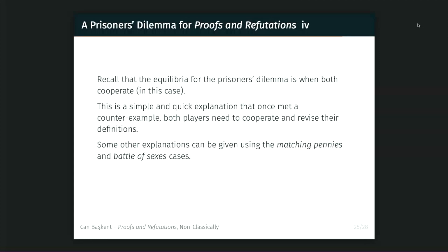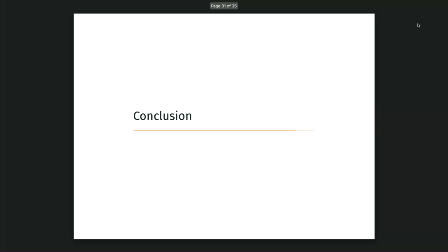I used the prisoner's dilemma here, but you can use similar examples such as Matching Pennies or Battle of Sexes, because they all give interesting explanations of why and how the players are choosing these moves. This is a non-classical game, as I said, because some of your strategies are inconsistent — such as proofs that do not prove. Some elements of your moves are also non-classical, because sometimes you revise but still end up with a contradiction. The pupils are not just done after one revision — it's a process, it is a practice.